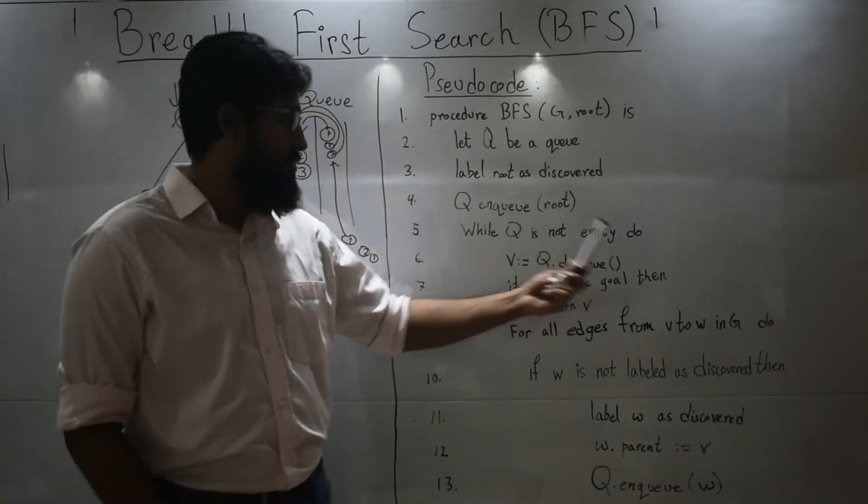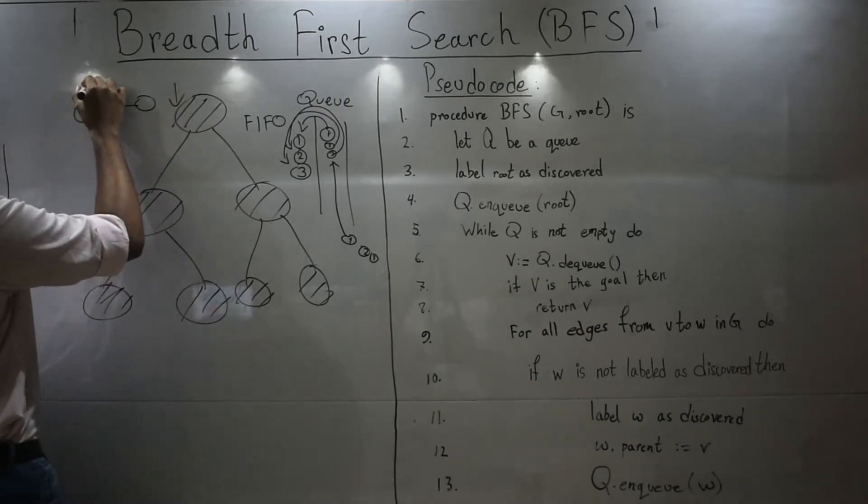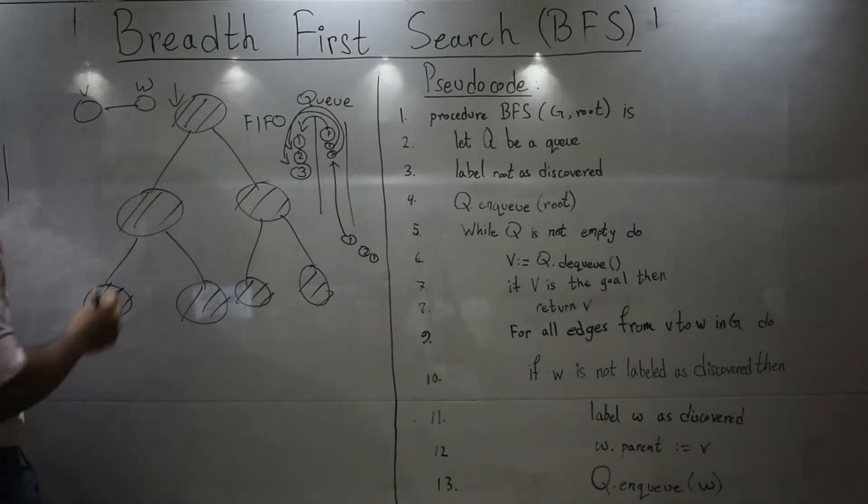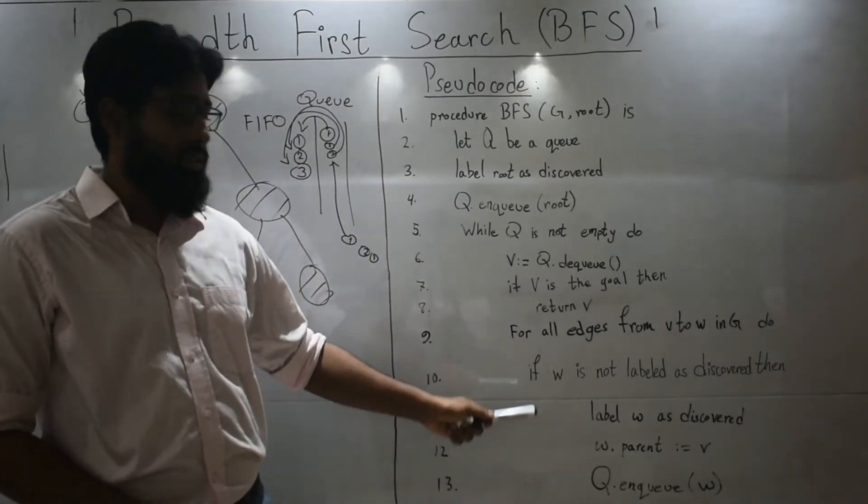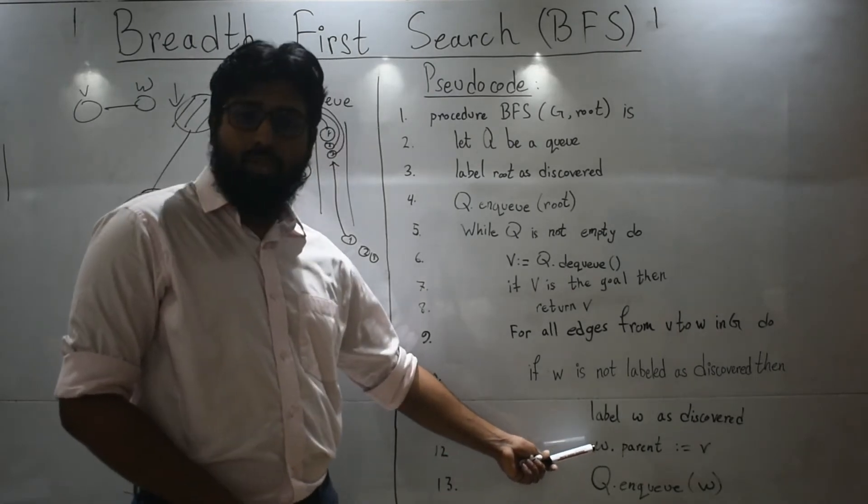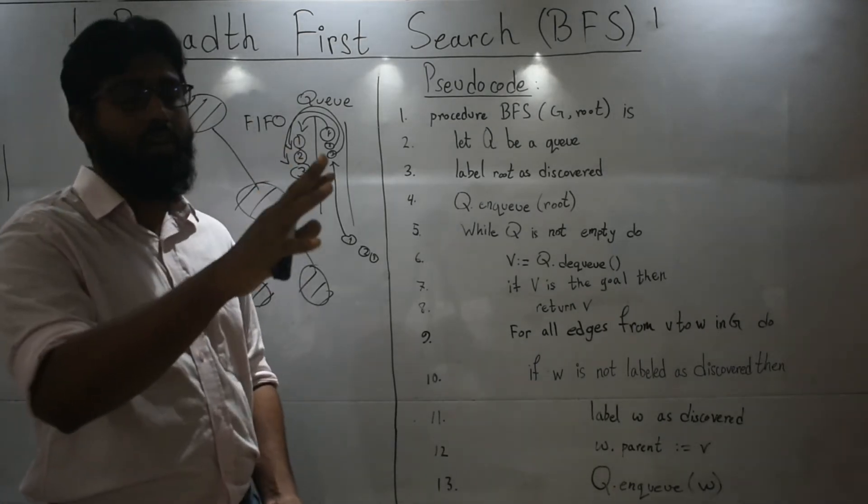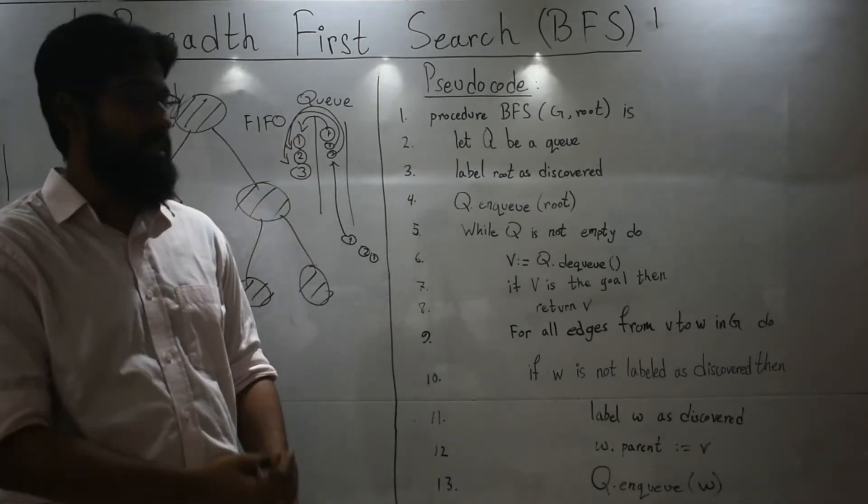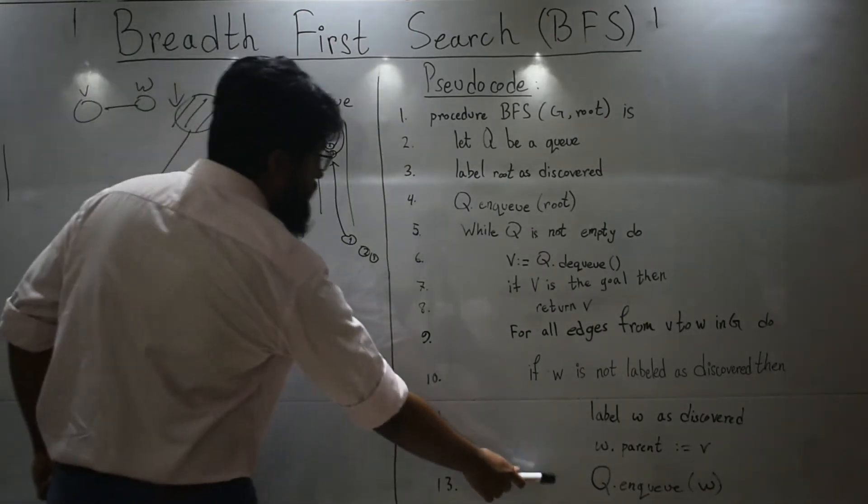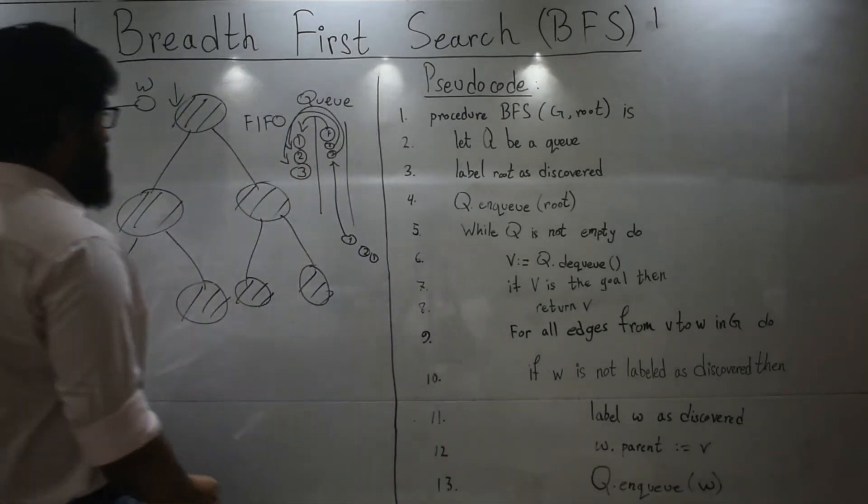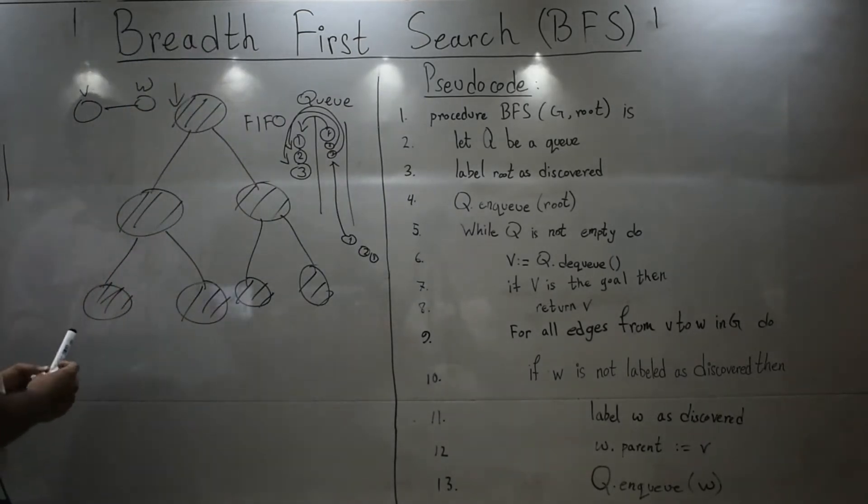Then for all edges from V to W. What does V to W mean? V to W simply means all the connected nodes from V to W. From V to W, if W is not labeled, label them. W dot parent is V, which means you will just establish a connection that from V, W has come. And then you will enqueue W. And after that you will just follow these loops. And when you are done, you will simply break out of them. Let's show you an example.